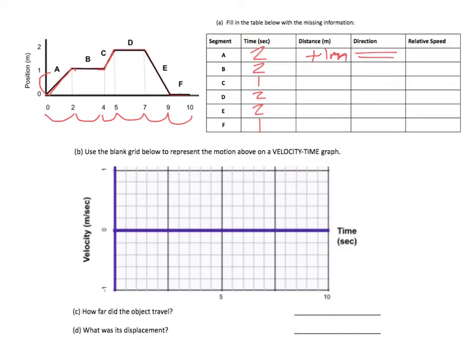For B, it's at one meter at the start and still at one meter here. So its distance, it hasn't traveled anywhere, zero. For C, it goes from one meter to two meters. So that's also going to be plus one meter.